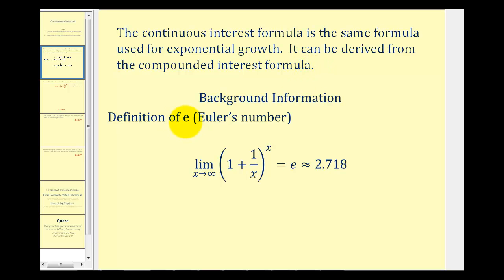But e is a very special number, very similar to pi. It's an irrational number which means it's non-terminating and non-repeating. E is often called Euler's number, and one definition of e is the limit as x approaches infinity of the quantity one plus one divided by x raised to the power of x. A decimal approximation for e is approximately 2.718.